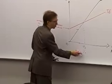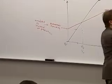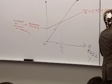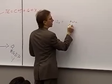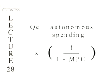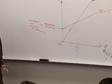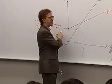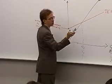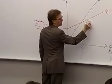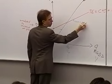There's a formula for the equilibrium level of income. It equals autonomous spending times a multiplier, which is 1 over (1 minus the MPC) — marginal propensity to consume. We can calculate that equilibrium level of income if we know two things: total autonomous spending, and the marginal propensity to consume. The slope of the total expenditures curve equals the MPC.